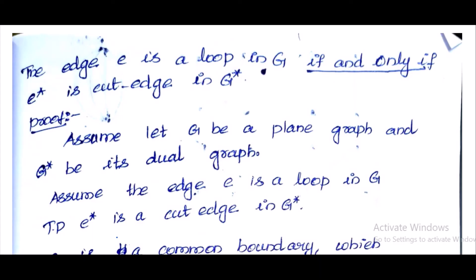Hello students, welcome to the class of graph theory. We will take the second theorem of the dual graph. We will talk about the first theorem of the dual of a plane graph, s-planar. This is the proof of the dual graph. The theorem states: edge e is a loop in G if and only if e-star is a cut edge in G-star. G-star is the dual graph — this is the if and only if condition.